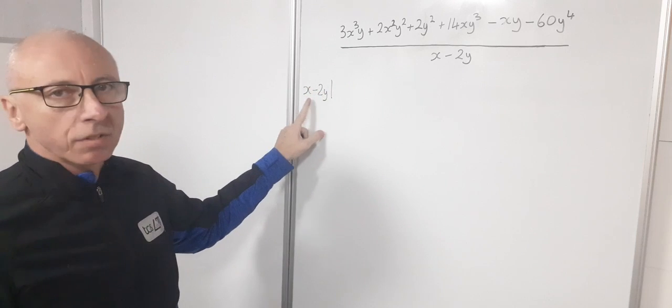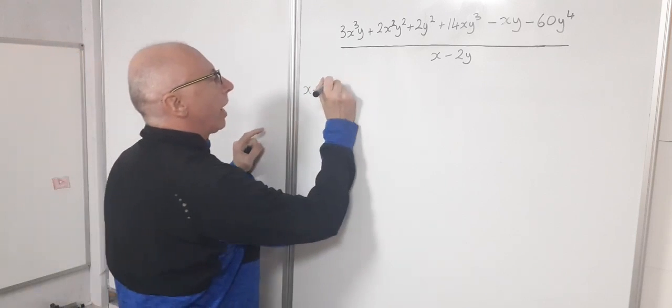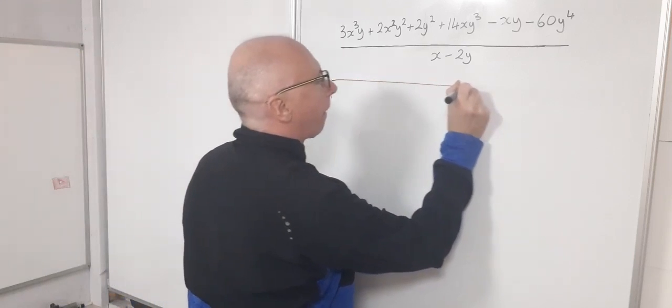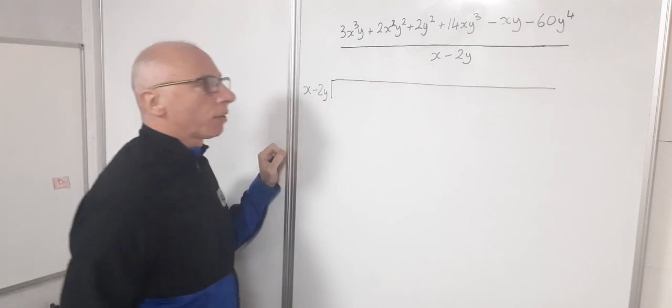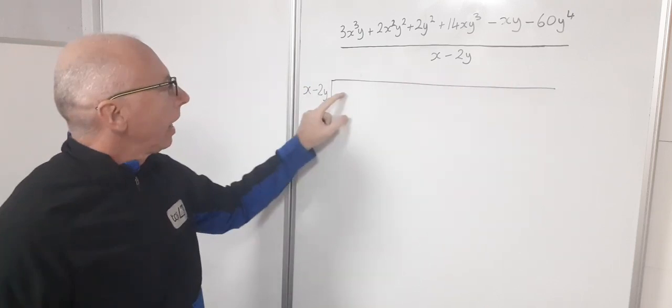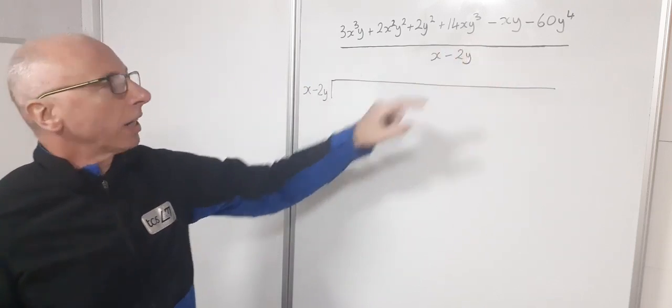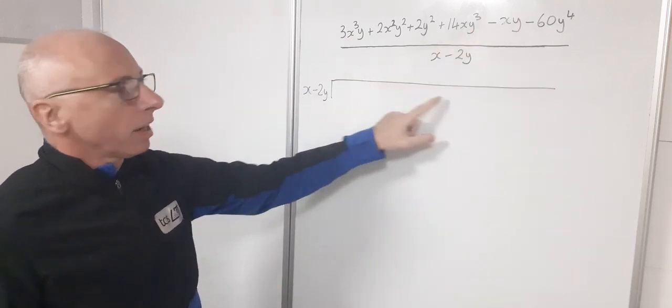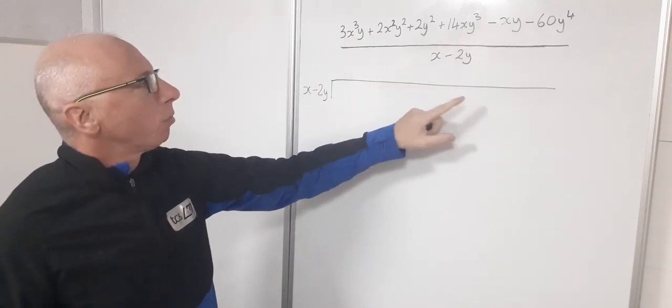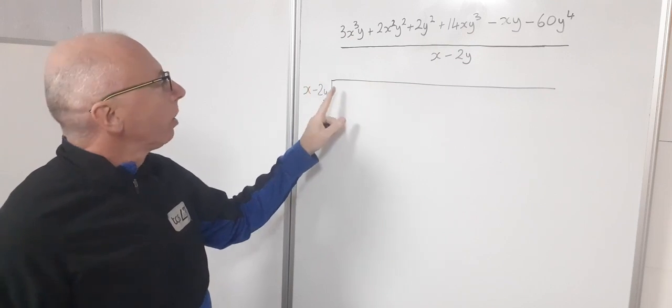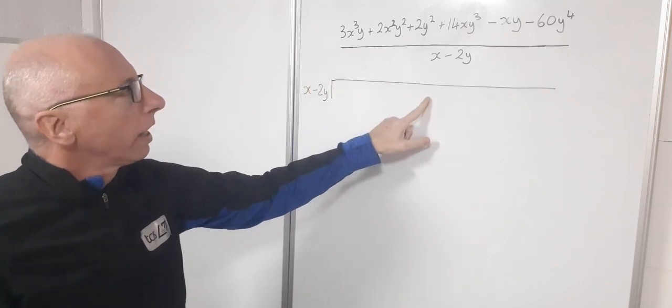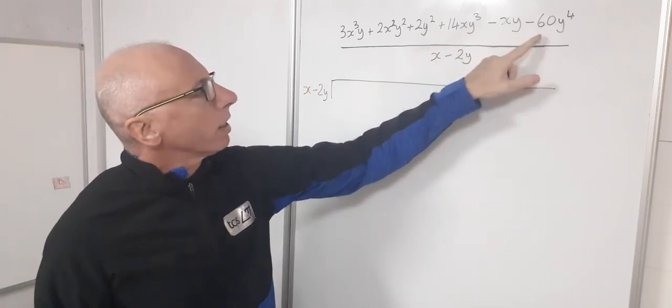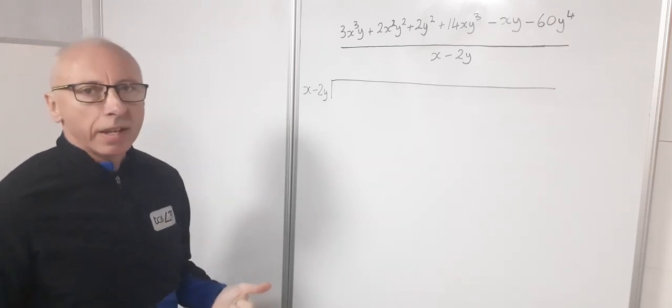Notice the order that these are in, because that is important. Then I'll draw my line across the top where the answer will appear, and my input will be my numerator. When putting these variables and terms inside this bus stop, we have to line them up with the x terms first and then list the ones with only the y's after.